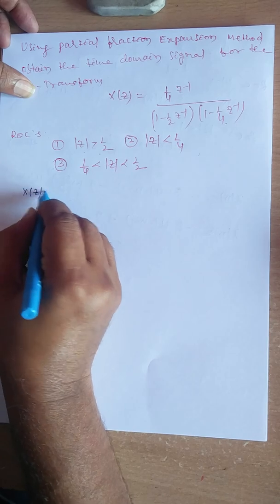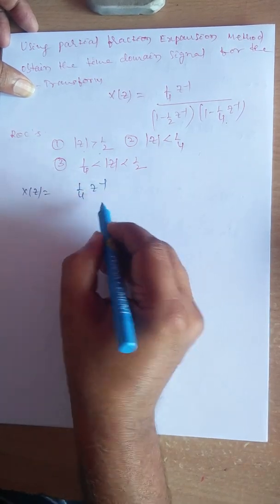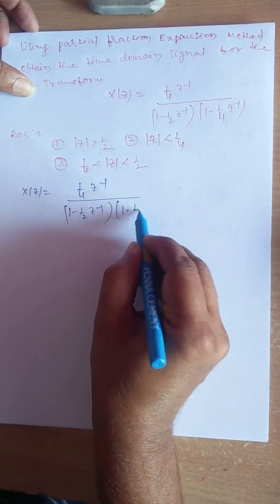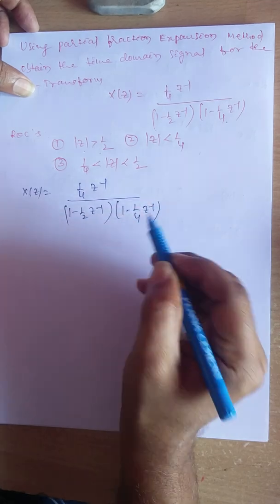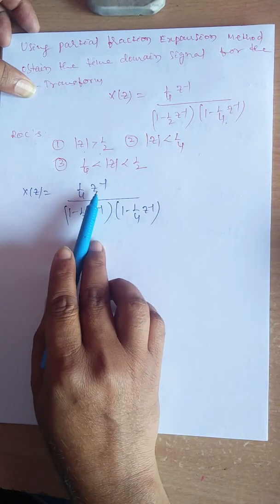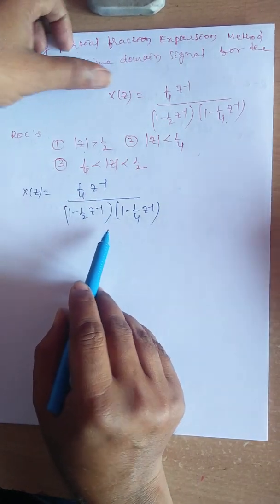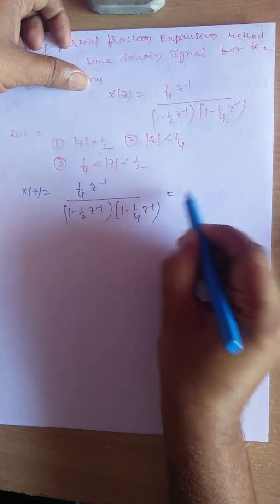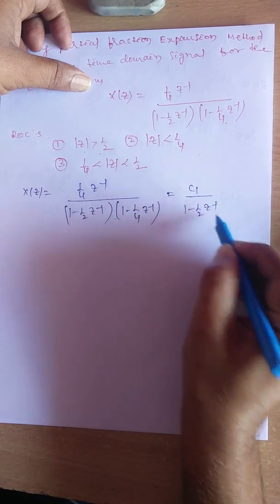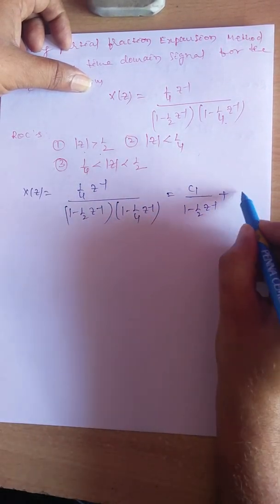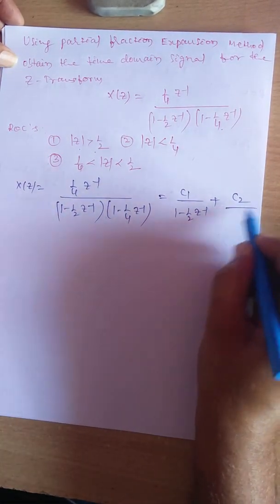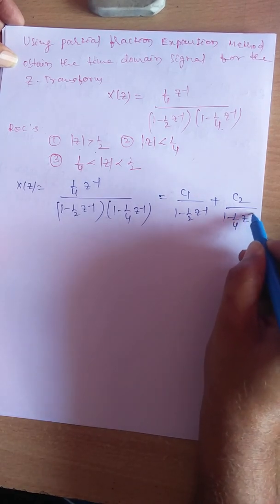X(Z) equals (1/4 Z⁻¹) divided by (1 - 1/2 Z⁻¹)(1 - 1/4 Z⁻¹). The denominator polynomial is already in factorized form. Since the numerator polynomial degree is less than the denominator polynomial degree, we can directly apply partial fraction expansion: C1 divided by (1 - 1/2 Z⁻¹) plus C2 divided by (1 - 1/4 Z⁻¹).